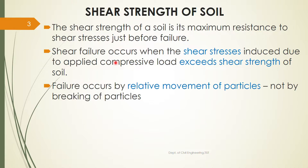Shear failure occurs by the relative movement of particles, not by the breaking of particles. When failure occurs, the particles slide over one another — each particle will not be breaking into different parts, but the particles will be sliding over one another. Many particles slide over different particles and a large mass of soil moves, causing failure. So failure is not by breaking of particles but due to the relative movement of particles over one another.